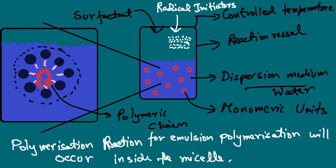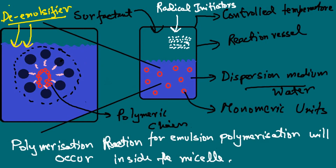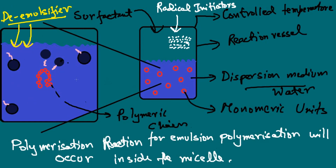To clean the polymer — that is, to remove the micelle — we need to add a de-emulsifier. On adding the de-emulsifier, the micelle loses its stability and breaks apart. The polymeric chain formed inside the micelle is now free, and many such polymeric chains are obtained, giving us the clean polymer. This completes the explanation of emulsion polymerization.